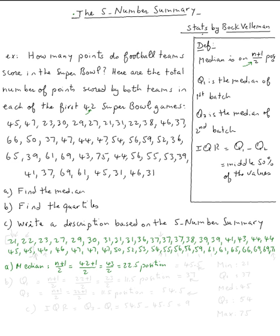So we need to count to position twenty-two point five. Counting through the ordered list, the twenty-second value is forty-five and the twenty-third value is forty-six. Twenty-two point five will be right between them, so the median is forty-five plus forty-six divided by two, which is forty-five point five.